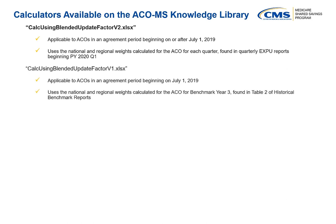The calculator with the file name CalcUsingBlendedUpdateFactorV1.xlsx also applies a blended national and regional update factor and is applicable to ACOs in an agreement period beginning on July 1, 2019. This version uses national and regional weights for the ACO for benchmark year 3, which are found in Table 2 of the Historical Benchmark Reports. This calculator should be used by ACOs with an agreement period beginning on July 1, 2019, and used with performance year 2019 and Quarter 3 and Quarter 4 reports.